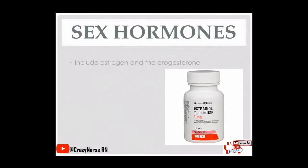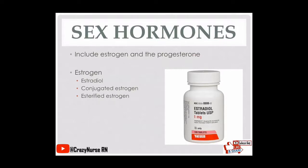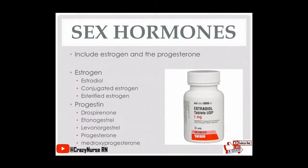First, let's have sex hormones, which include estrogen and progesterone. Estrogen examples are estradiol, conjugated estrogen, and esterified estrogen — it's easy to identify because 'estrogen' is attached to the drug name. For progestins, examples include drospirenone, etonogestrel, levonorgestrel, progesterone, and medroxyprogesterone. These are identifiable by the term 'progesterone' or a related term in the drug name.